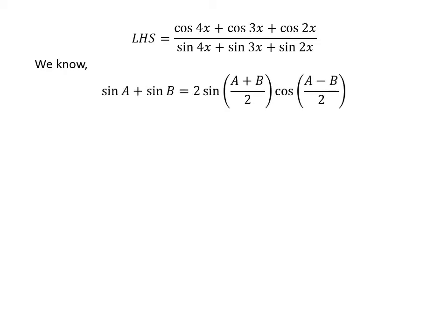We know the famous trigonometry identity: sine of a plus sine of b is equal to 2 times sine of half of (a plus b) times cosine of half of (a minus b). The proof of this identity is given in the video appearing in the upper right corner, and the link is also given in the description section.